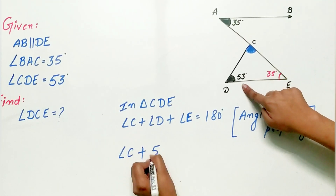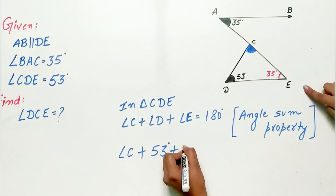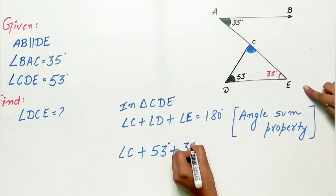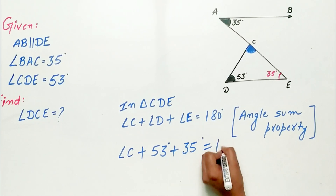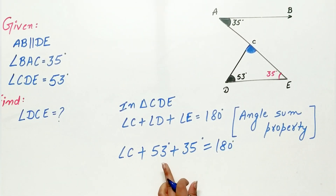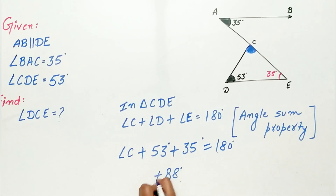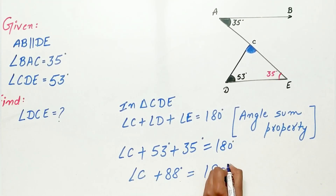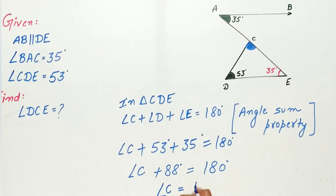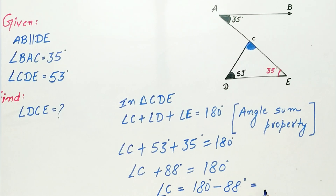Angle D is 53 degrees, angle E is 35 degrees, and together with angle C they equal 180 degrees. 53 plus 35 is 88, plus angle C equals 180 degrees. Therefore, angle C is 180 minus 88, which equals 92 degrees.